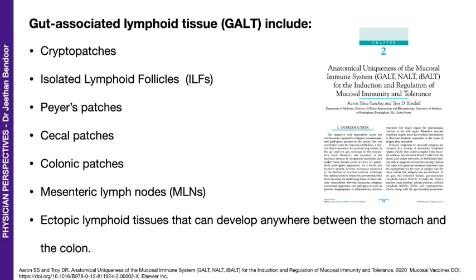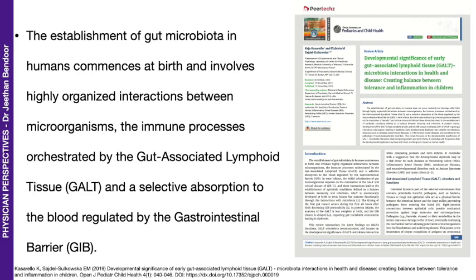I had this image on earlier in Episode 2. I bring it up again just to impress upon you that the gut-associated lymphoid tissue, or the GALT, is strewn all over the gut. They are physically present as cryptopatches, isolated lymphoid follicles, Peyer's patches, cecal patches, colonic patches, mesenteric lymph nodes, as well as ectopic lymphoid tissue that can develop anywhere between the stomach and the colon.